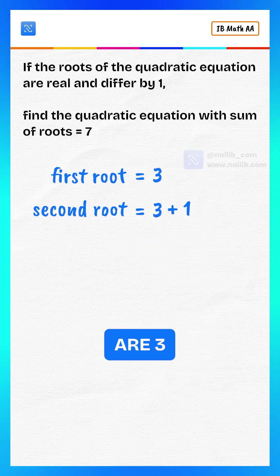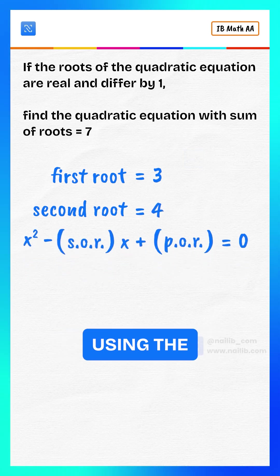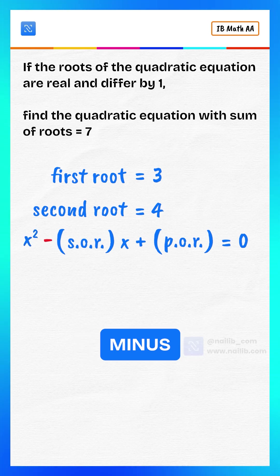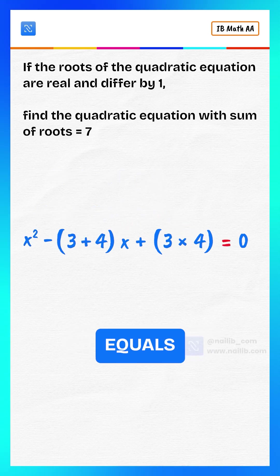That means our two roots are 3 and 4. Now we'll form the equation using the identity: x squared minus sum of roots multiply by x plus product of roots equals 0.